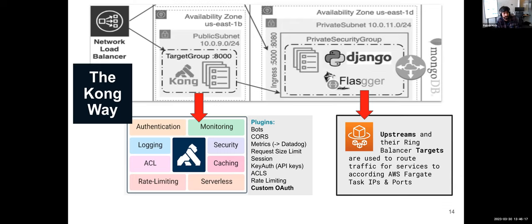A bit more on Kong — instead of having aspects like authentication, monitoring, logging, group permissions, rate limiting, caching, and security all within your backend services, you pull them out into their own layer. Plugins apply these things to requests as they move through Kong. This typically works by setting headers, so once the request is forwarded to the upstream service, that service gets information in the header inserted by Kong. The plugins we use include bot blocking, CORS, metrics sent directly to Datadog, and request size limits.